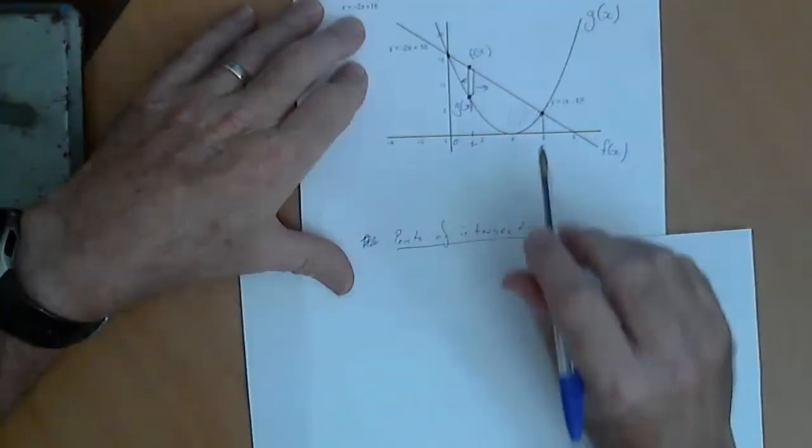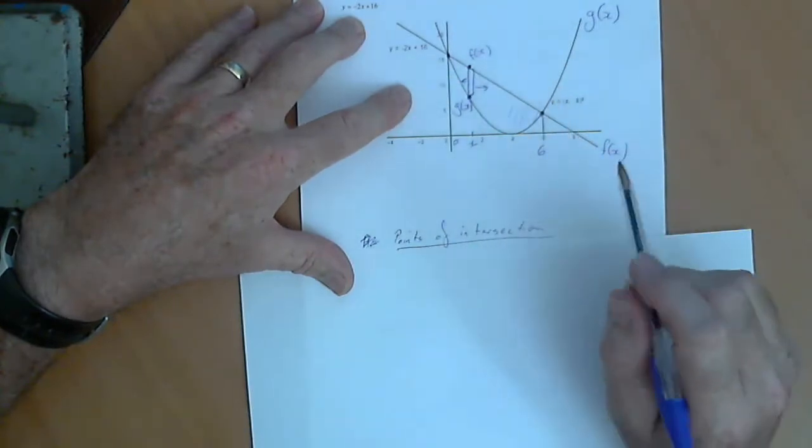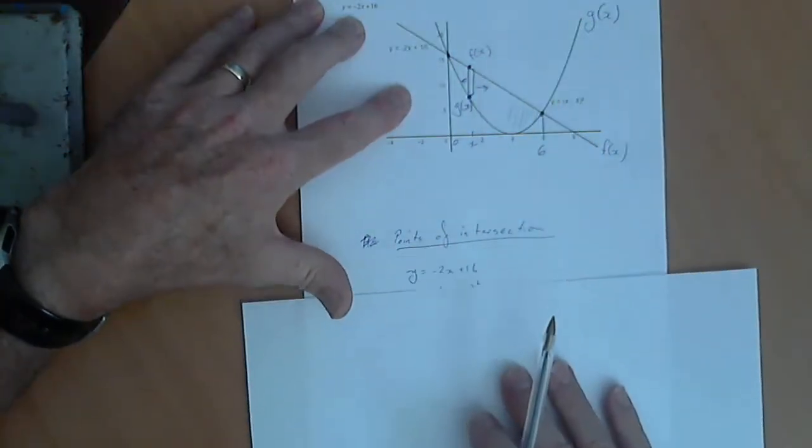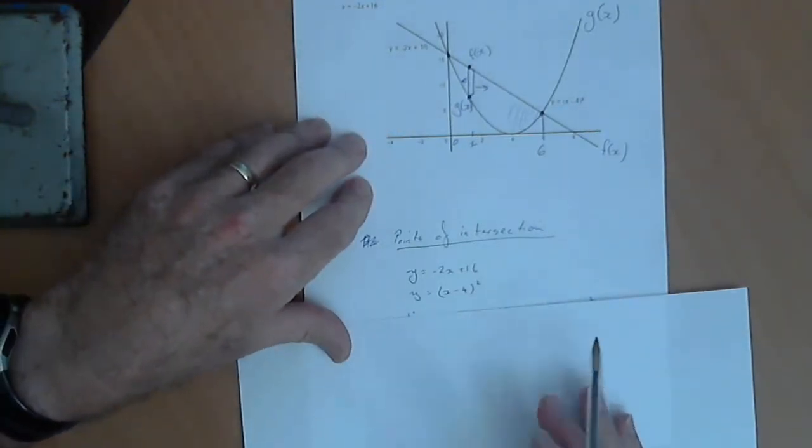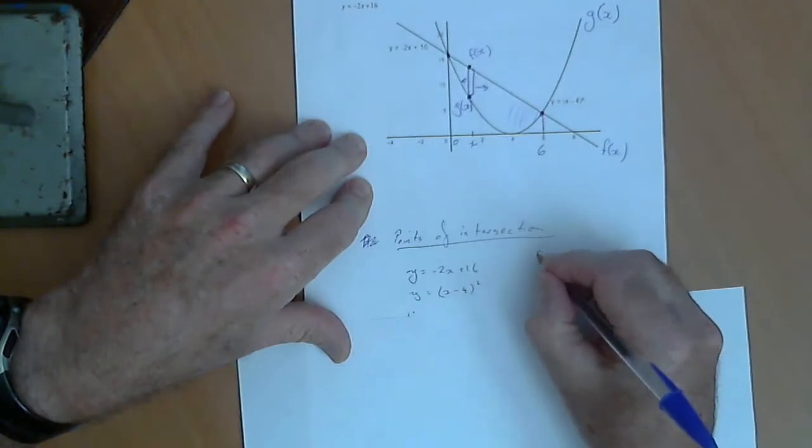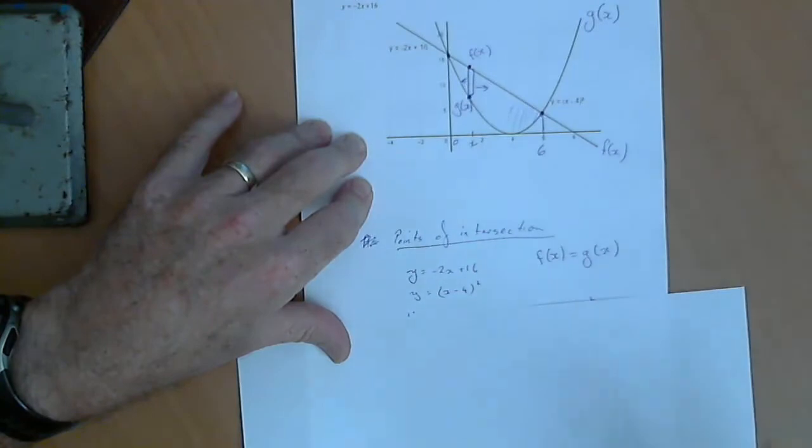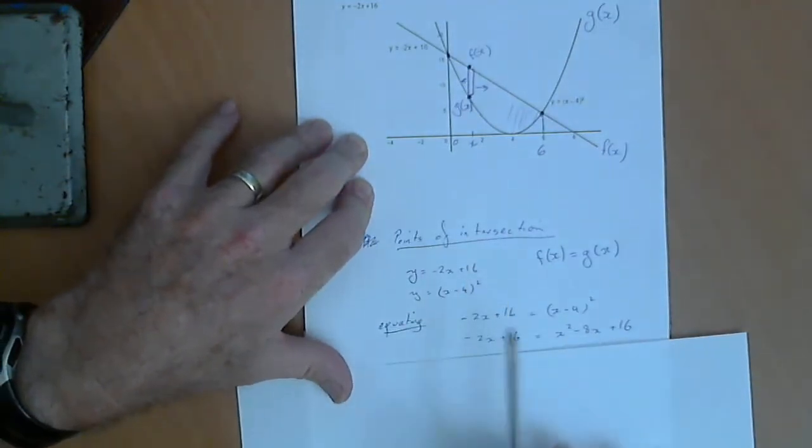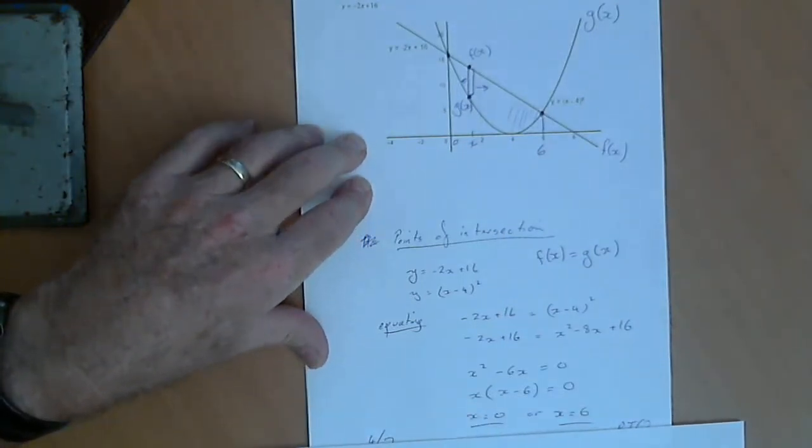So, first up, we need to find these points of intersection. Now, we're lucky we've got a nice grid, but you won't have that in general. Generally, what you will need to do is solve those two equations simultaneously. And because at the points of intersection, the two equations are equal. So, if you've got y as a subject, you can just equate the two functions in x. So, equate them, and then work through the process of solving the simultaneous equations, and you get x equals 0 and x equals 6.